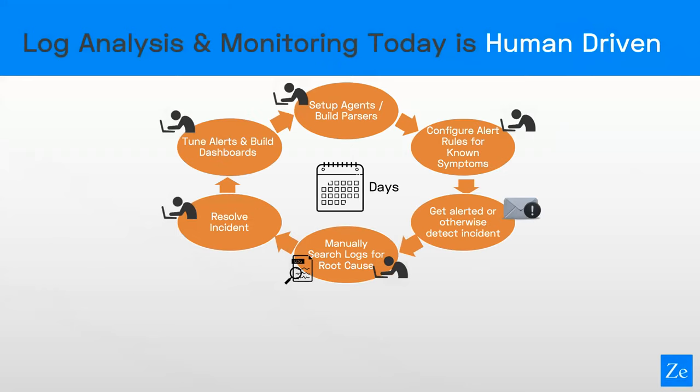The reason we focus on this problem is because if you look at the monitoring space today, there's a lot of manual work involved. Our monitoring tools are very dumb and you have to tell them what to look for. There's a bunch of work involved to serve agents, build parsers to extract meaning out of log events, configure all the alert rules — which in complex environments can grow to hundreds of thousands of alert rules. The only real automation you get is being alerted when an incident is detected, and then you still have to manually search through gigabytes or terabytes of logs for root causes.